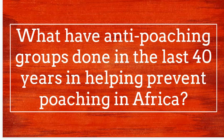On the second slide, this group is focusing on what anti-poaching groups have done in the last 40 years in helping prevent poaching in Africa. But which anti-poaching groups and where in Africa? A common problem is lumping all of Africa together as if it were a cohesive legal system. By selecting one individual nation inside Africa and a specific type of animal — perhaps rhinos or elephants — the project could have been more focused.